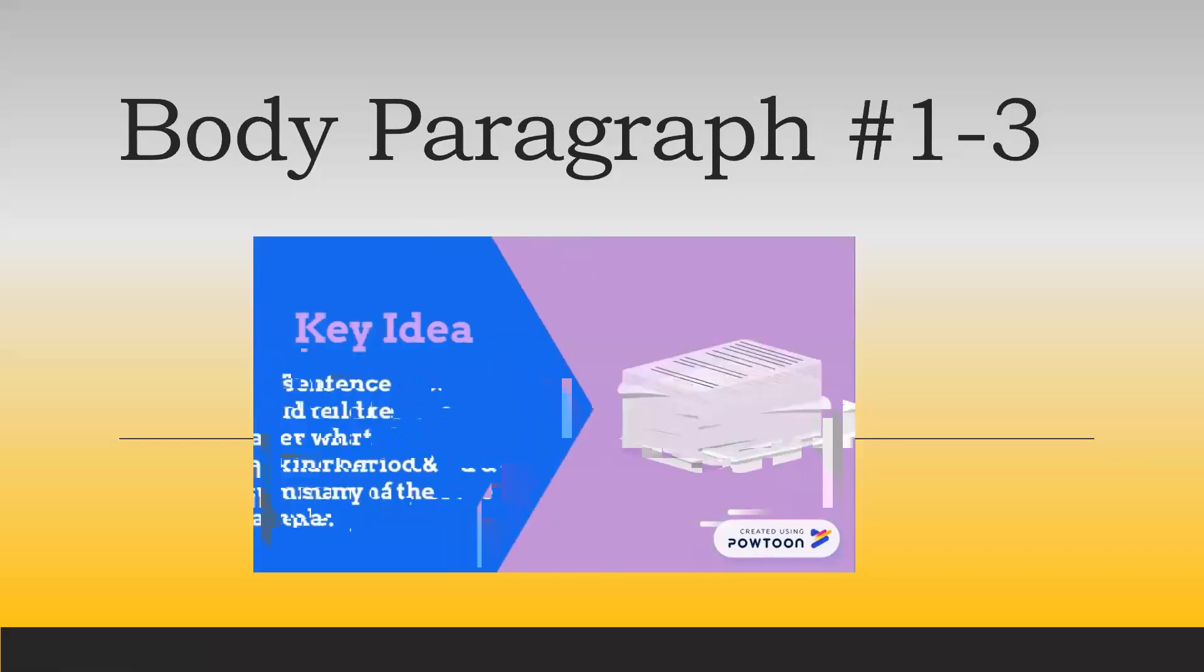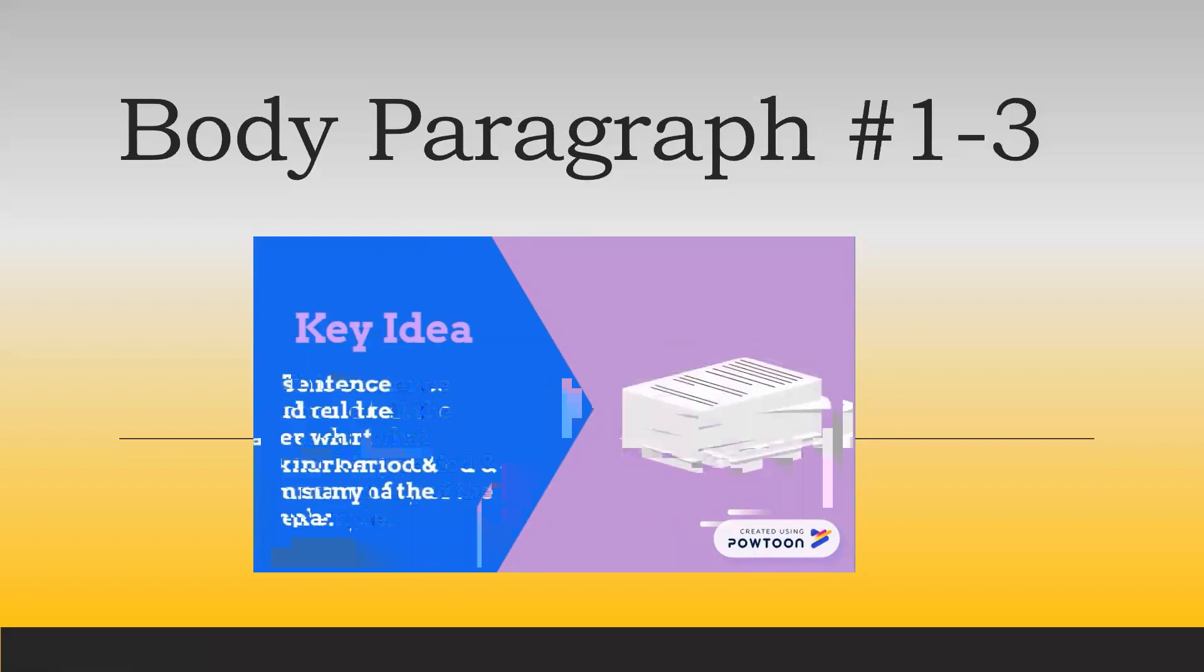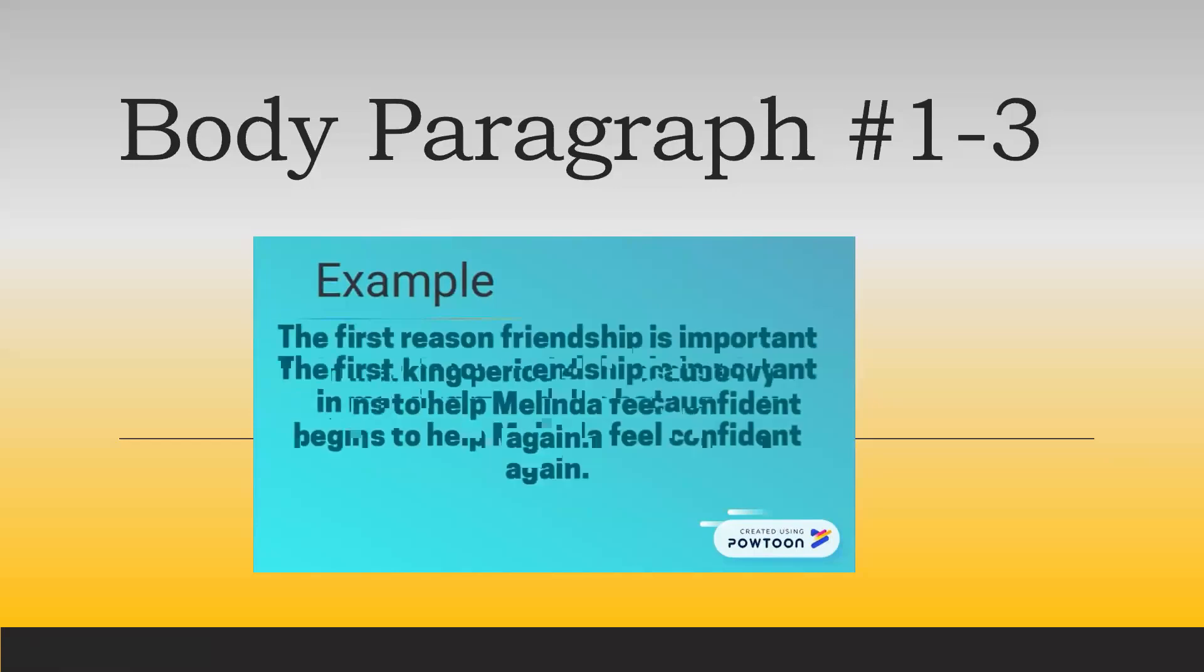Your key ideas sentences should tell the reader what marking period and a summary of the example. For example, the sentence, the first reason friendship is important in marking period four is because Ivy begins to help Melinda feel confident again is both explaining what marking period and a summary of the example I will use in my detail.